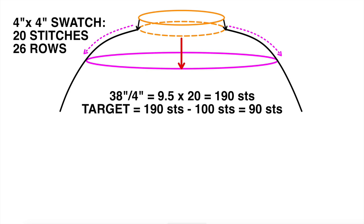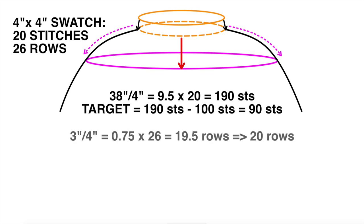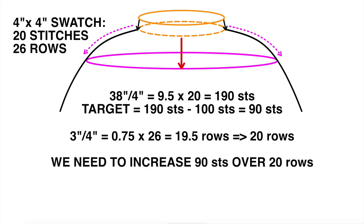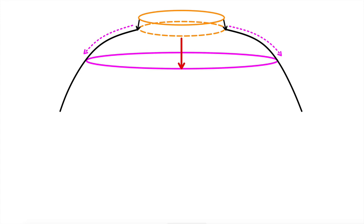Now we need to figure out over how many rows. We have 3 inches: 3 divided by 4 times 26 rows gives approximately 20 rows — actually 19.5, rounded up to 20. So we need to increase 90 stitches over 20 rows. Because we're usually increasing every other row, we spread those 90 stitches over 10 increase rows.